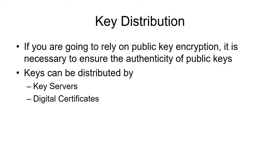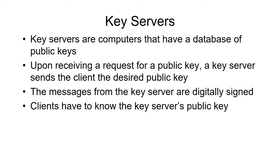In order for digital signatures and public key encryption to work, you have to have a means of giving people the public keys. There are two basic ways to do this. One is to have key servers, so that you could ask a key server for somebody's public key. Key servers are pretty simple — you send a request to the key server, which has a big database, and it looks up the public key of the user you're interested in and sends it back to you. The key server uses its own digital signature so that messages to and from it are digitally signed, and therefore you know you're getting the correct result from the true key server.